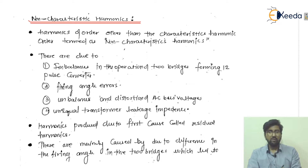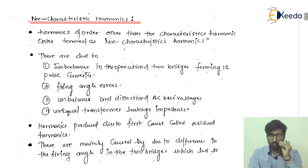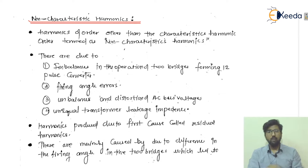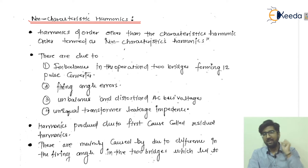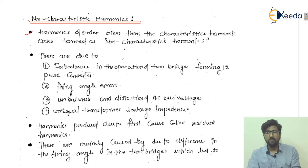To understand non-characteristic harmonics, you first need to understand characteristic harmonics. Characteristic harmonics simply follow one mathematical formula: NP ± 1, where N is an integer and P is the pulse number. Any harmonics that do not follow this NP ± 1 relation are called non-characteristic harmonics. Characteristic harmonics follow NP ± 1; non-characteristic harmonics do not.